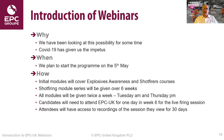Shot firing modules will be given over six weeks and the explosive awareness will be done over the first two weeks, then the firing grounds experience. All the modules are going to be given twice a week — Tuesday morning and Thursday afternoon. Candidates will need to attend EPC UK for one day in week six for the live firing session. We will record all of the webinars and the attendees will have access to the recordings for the following 30 days, so if there's something they want to go back over, revise, or review, they can play it back and rewind it.